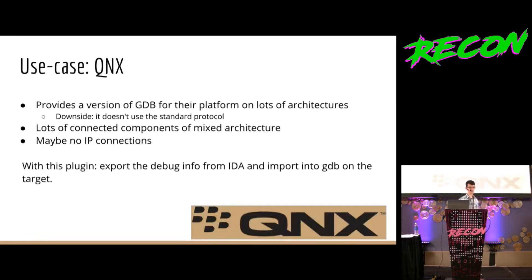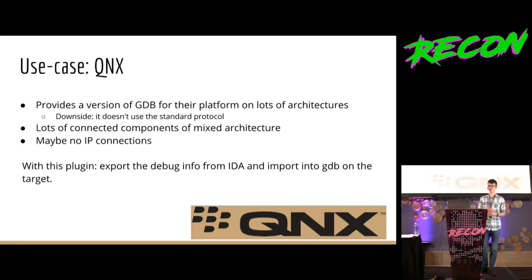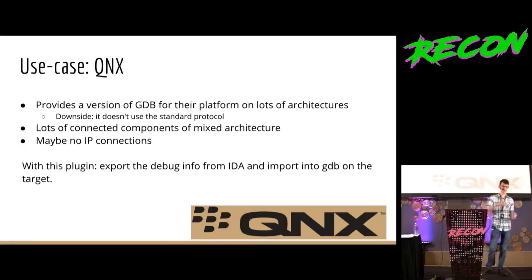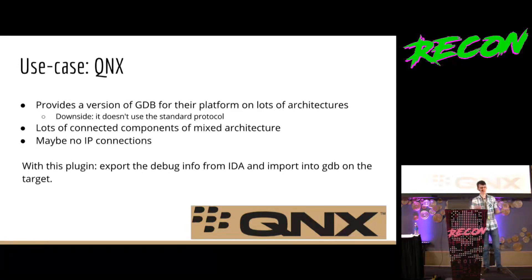QNX is a good use case here. For the unfamiliar, QNX is a real-time operating system — it's pretty full featured, has a scheduler, loads ELF files, and the user interface is similar to Linux in some respects. They provide a fork of GDB that you could use to debug things on board, which would be awesome. But sometimes you don't have IP interfaces, and the GDB fork maintained by QNX has a different protocol for remote debugging, so you'd have to get the sources and patch that back in.